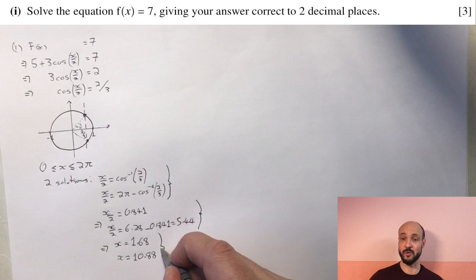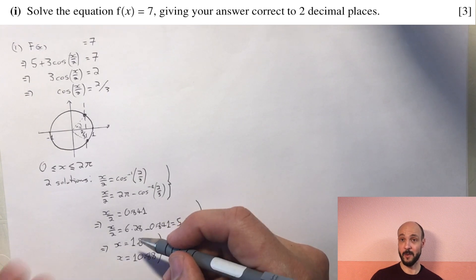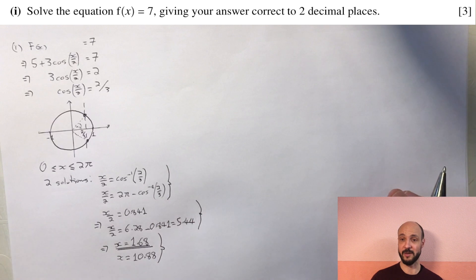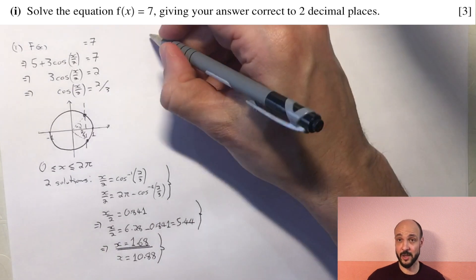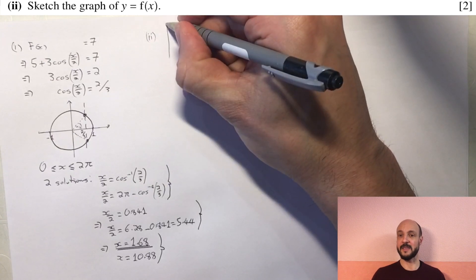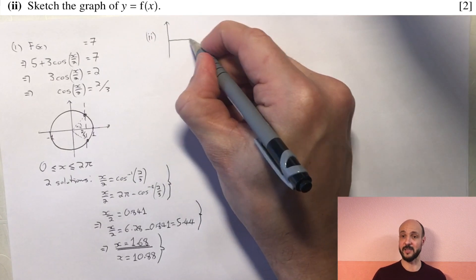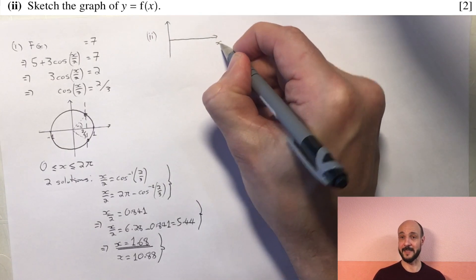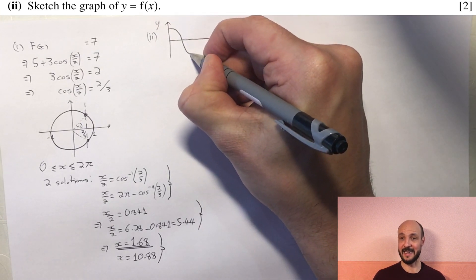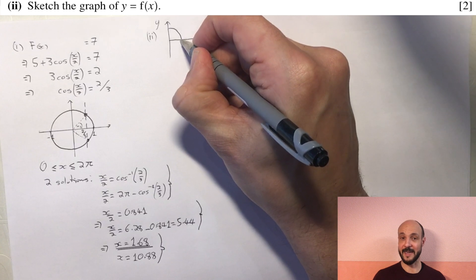So the second question, we want to draw the graph. The easiest way to draw the graph when this is a variation on a trigonometric function is to take the internal function, the cosine function in this case, and to apply the translations and transformations that have been applied to it a step at a time.